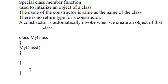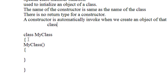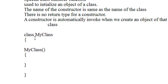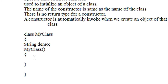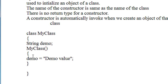Now I am going to create an example demonstrating how a constructor works. Here I am going to create a class called MyClass, and I declare a string variable called demo. The name of the string variable is demo, and here I am going to initialize that string variable — demo is equal to demo value.